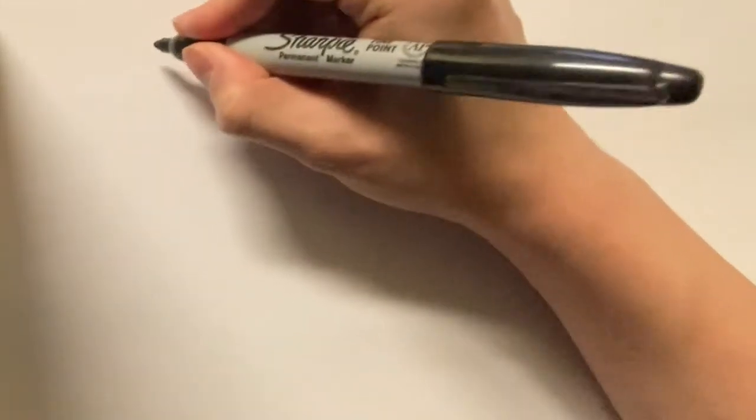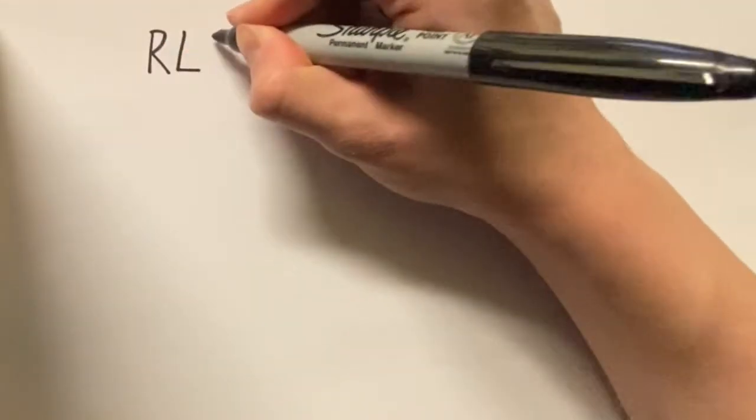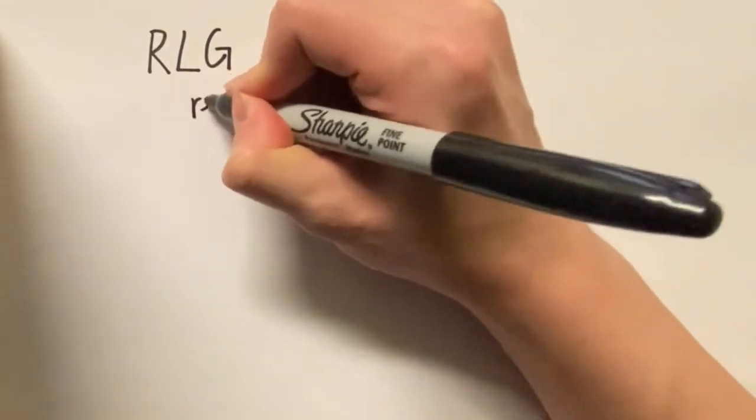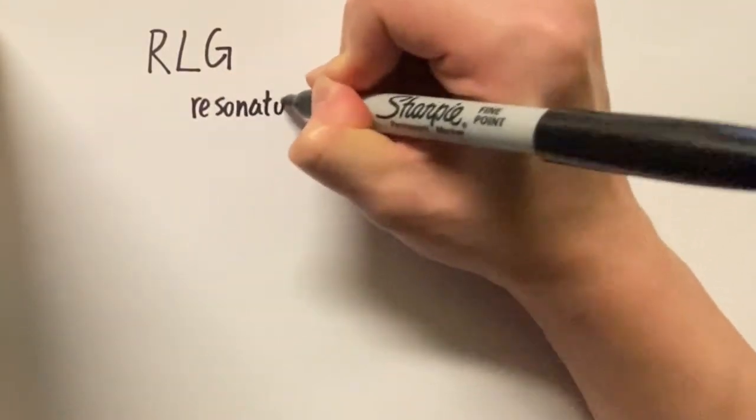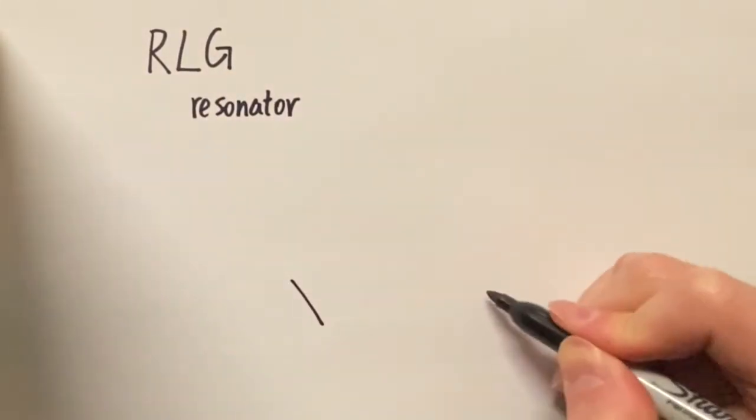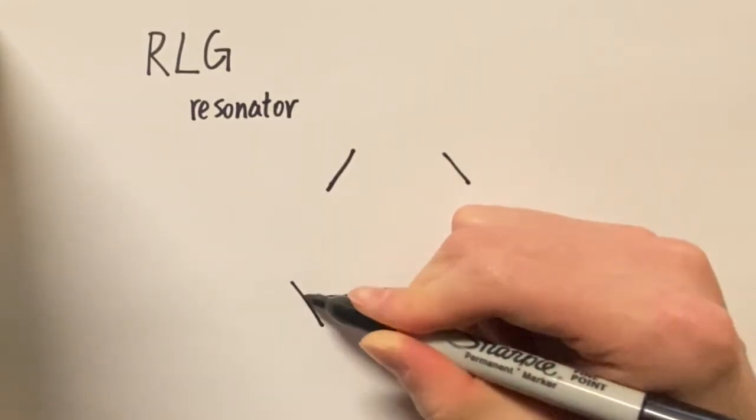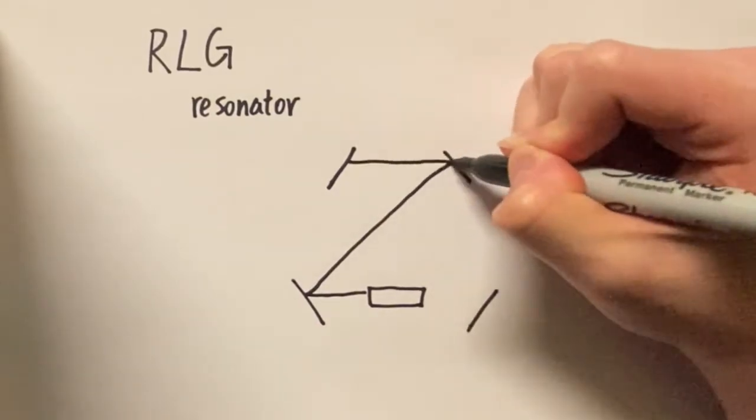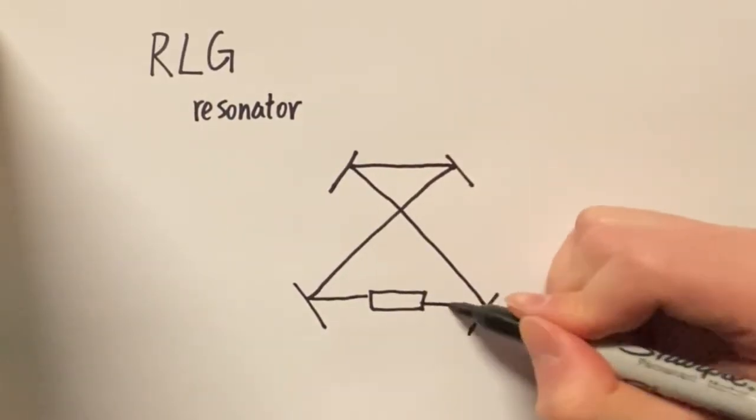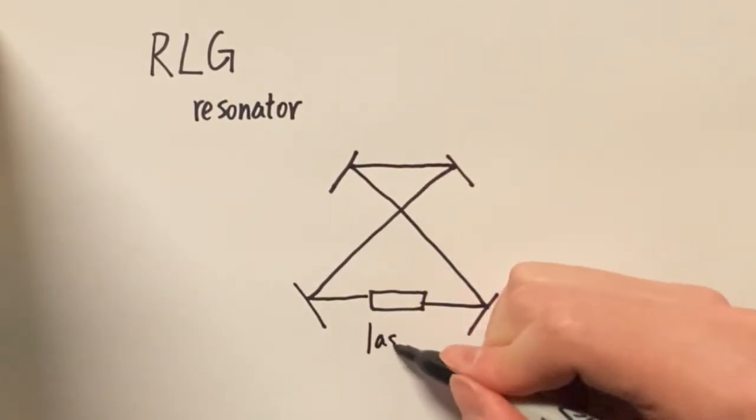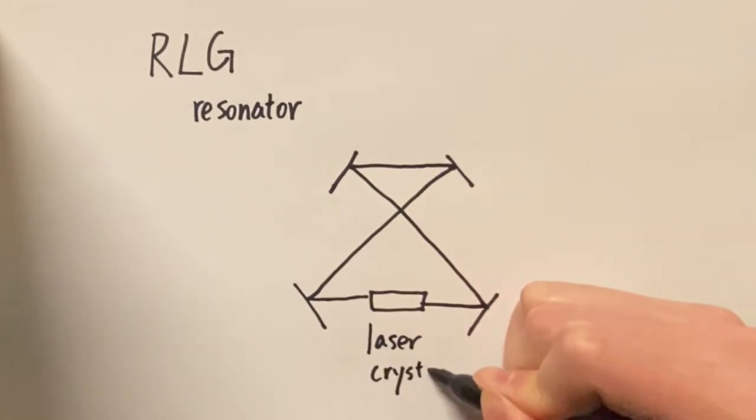Today I'm going to talk about ring laser gyroscope. First I want to mention the ring laser. A ring laser is a laser that its resonator has the form of a ring. There are usually more than two reflectors and we use the highly reflective dielectric mirrors which utilize total internal reflection to keep light away from escaping.